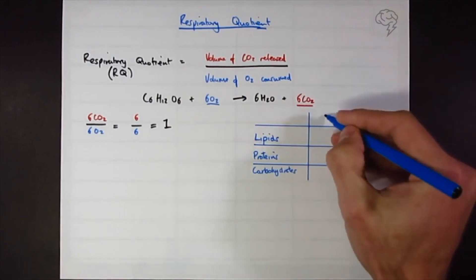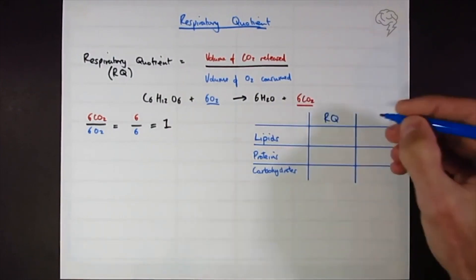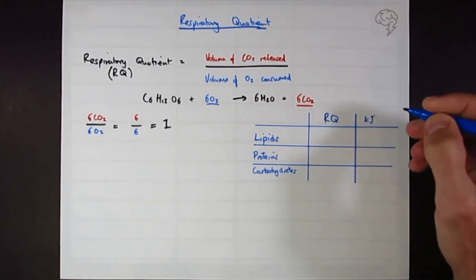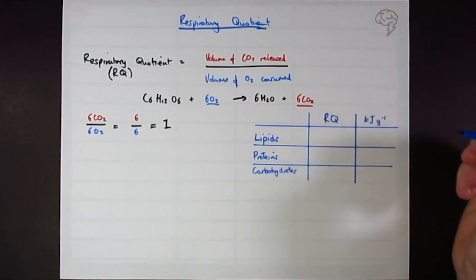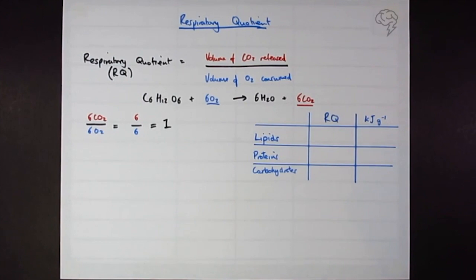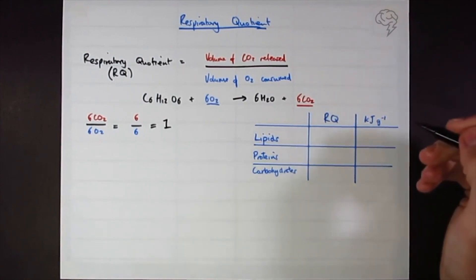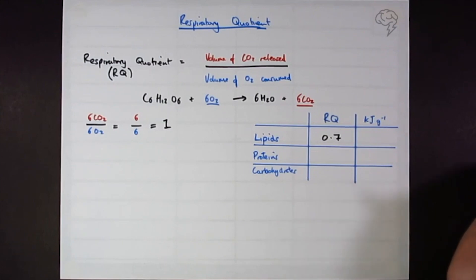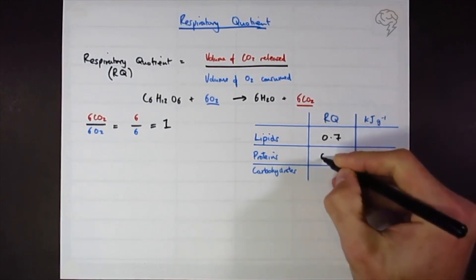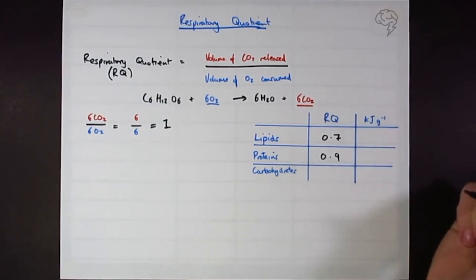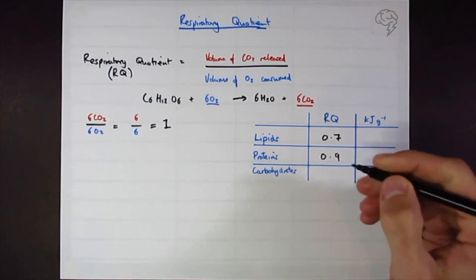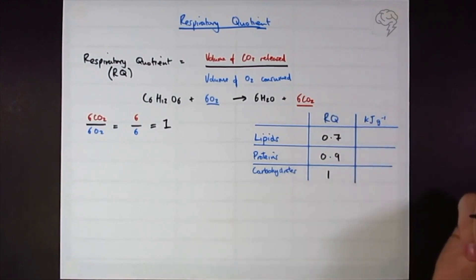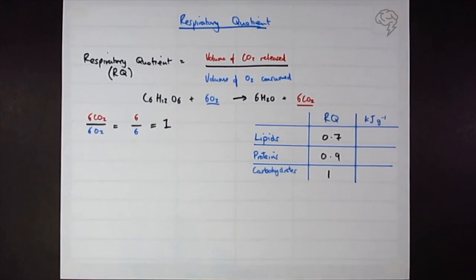We have two columns. First one is going to be respiratory quotient and this one is kilojoules of energy per gram. Let's put some numbers in this table. Fats or lipids are going to have the lowest at about 0.7, proteins a little bit higher at 0.9, and carbohydrates we're going to have one.